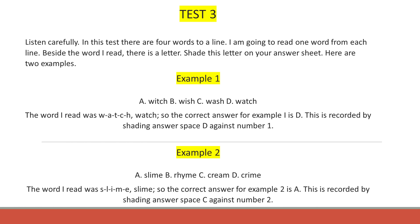Example 2. Slime. The word I read was S-L-I-M-E. Slime. So the correct answer for example 2 is A. This is recorded by shading answer space A against number 2. Now get ready to answer the rest of test 3 on your answer sheet. Start at number 21.